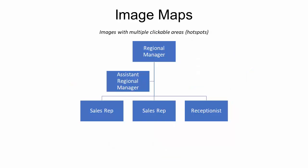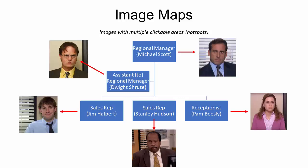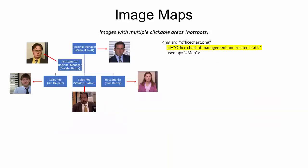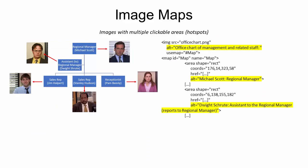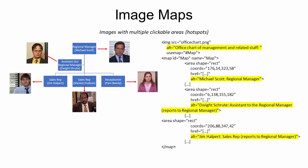Image maps are images that have multiple clickable areas or hotspots. If you have an image map like an organizational chart, for example, where you want different parts of the image to link to different web pages or sections of your website, then your alt attribute should include an overall context for the set of links, and alternative text for each individual clickable area describing the purpose or destination of the link.